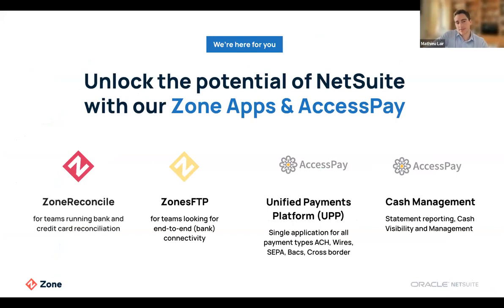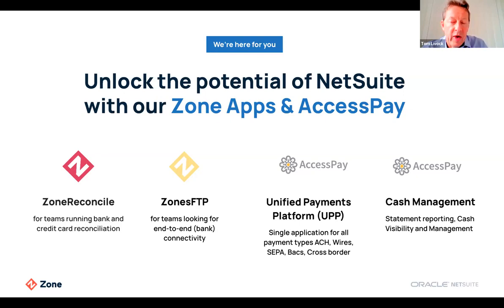What are we going to showcase today? Two Zone apps and two applications from AccessPay. Zone Reconcile to reconcile AP and AR transactions within one screen, and Zone SFTP — the connector to transfer data from a server to NetSuite and vice versa. AccessPay has two applications: the Unified Payments Platform for processing any bank-to-bank payments such as ACH, SEPA, BACS, wires, or intercompany transfers; and a cash management application which allows you to receive statement data automatically from your banks, view cash positions, and use that data in NetSuite to reconcile transactions.